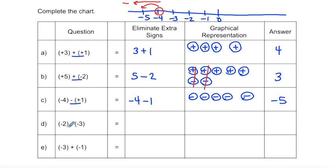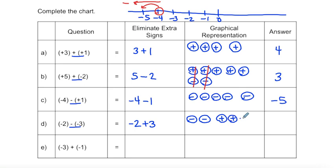Example D: I have negative two — keeping the negative sign. Two negatives directly beside each other make a positive, so that's a positive three. Graphically: two negative integers and three positive integers — I can eliminate the matching sets of positive and negative integers — and I'm just left with positive one, or one.